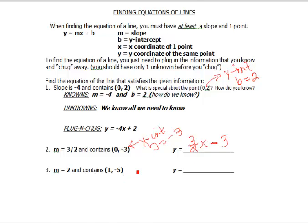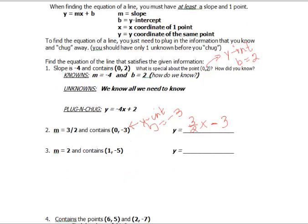Alright, this time it's a little bit harder. We don't have the y-intercept. This is not the y-intercept, so we have to use plug and chug. So now we know m is 2, x is 1, and y is negative 5.